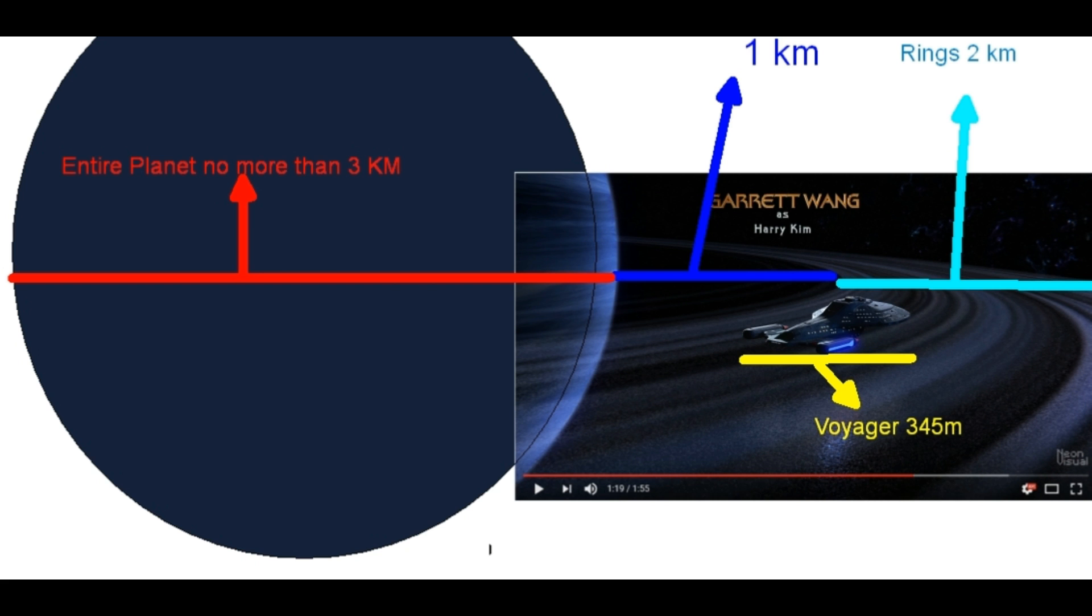Because remember, if you take the planet Saturn, which is 120,000 kilometers in diameter, imagine the scale of the rings. Now, I am not very sure about the scale of them, but I know they are very, very, very big.